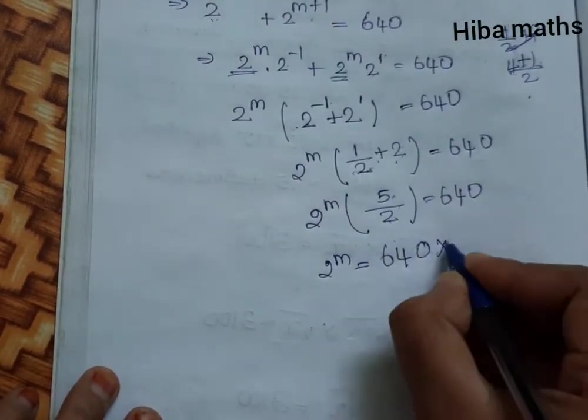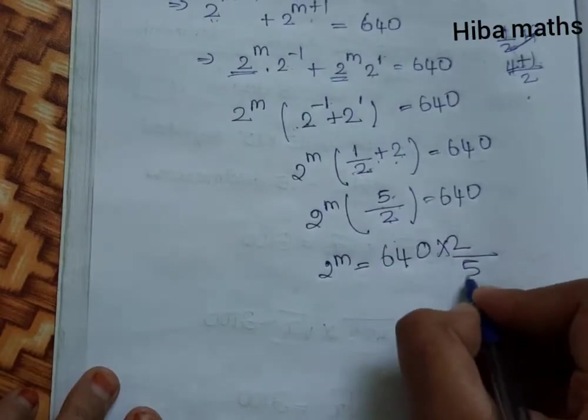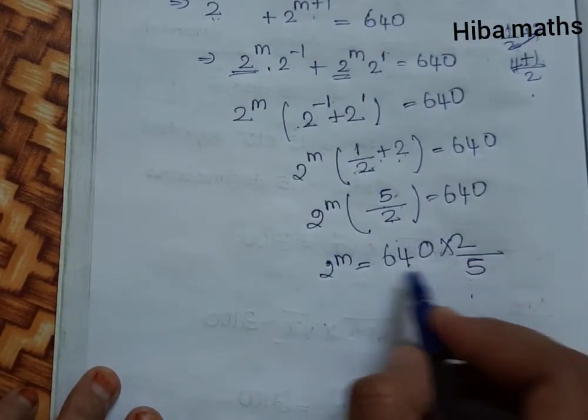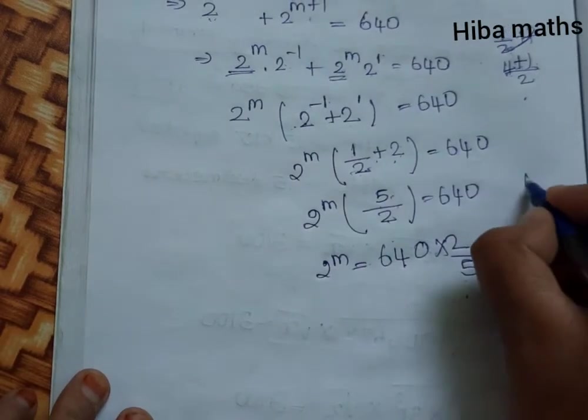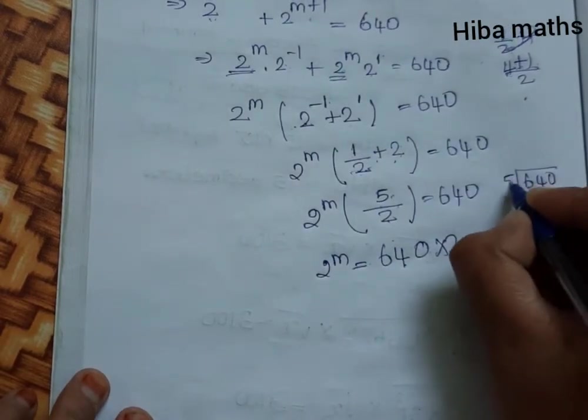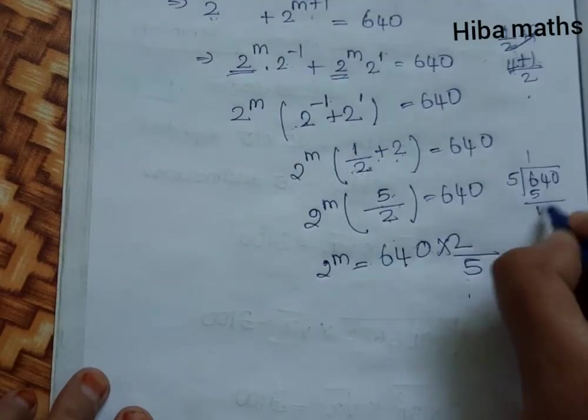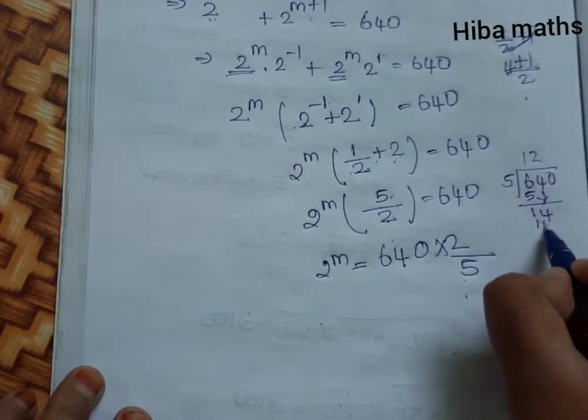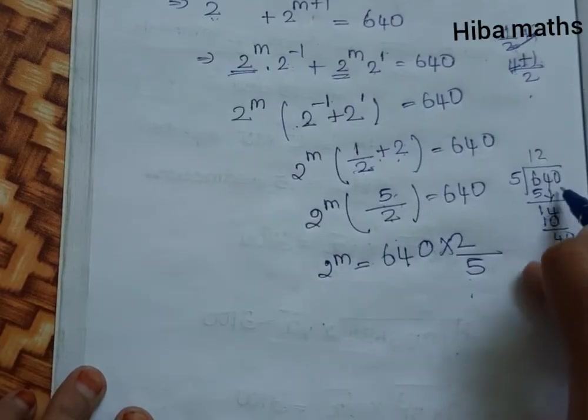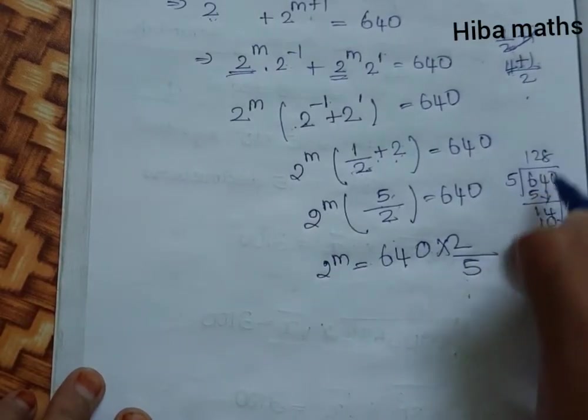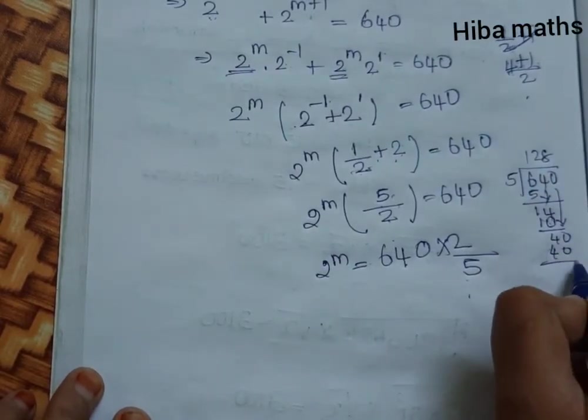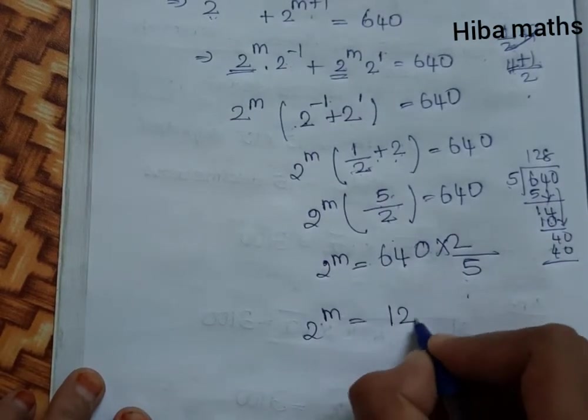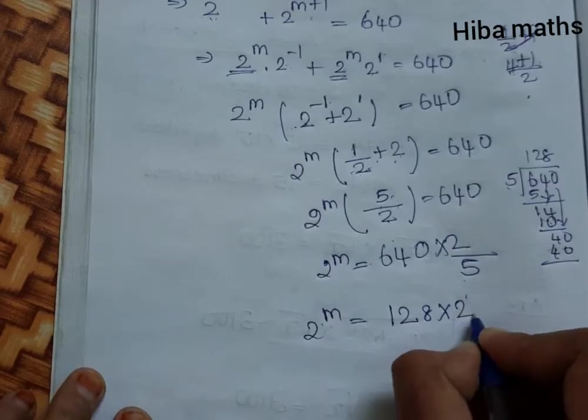To solve for 2^m, we multiply by the reciprocal 2/5. So 640 divided by 5: performing the division, 640 ÷ 5 = 128. Therefore 2^m = 128 × 2.